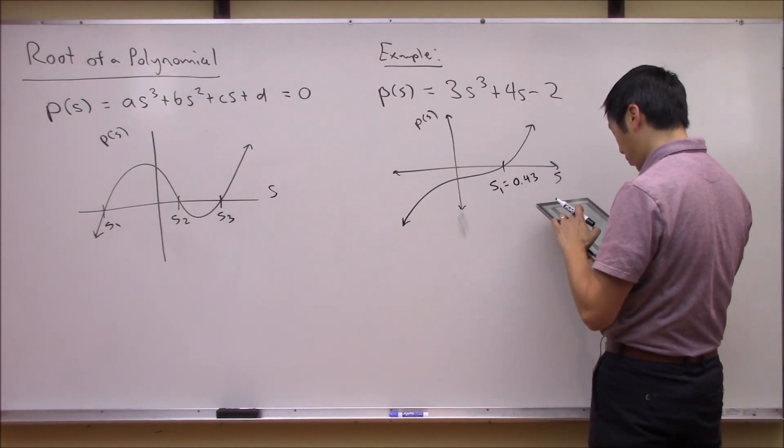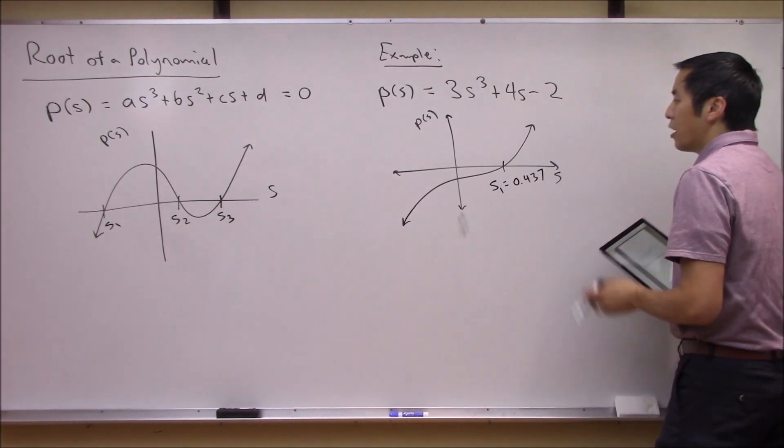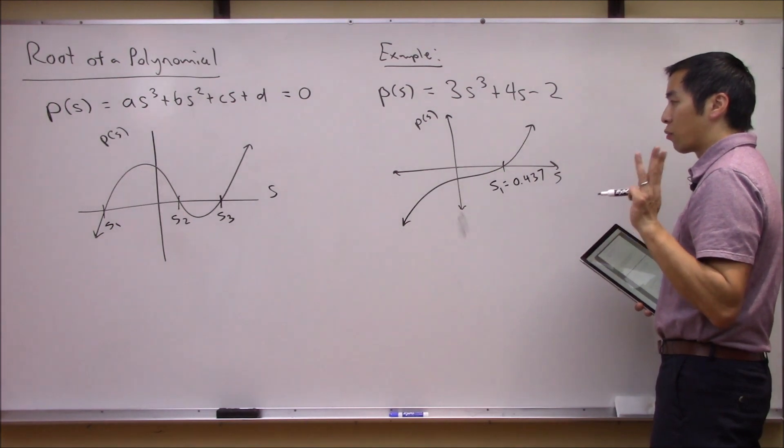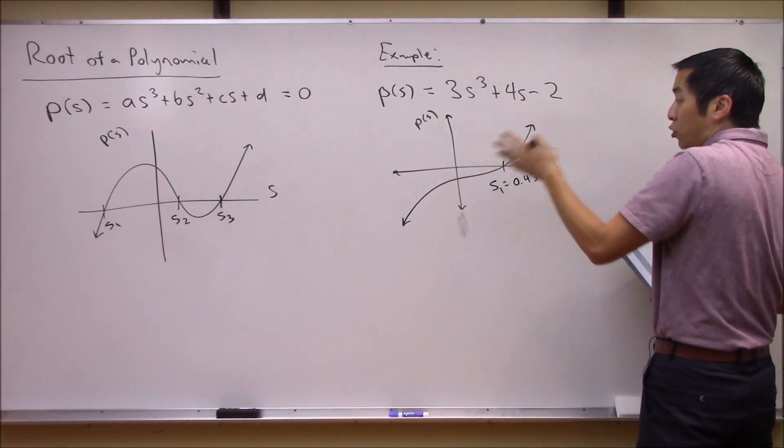I think if you plot this thing out that's what you'll end up getting, point four three seven. But we know that this is a third-order polynomial so there should be three roots, so two of them are imaginary.